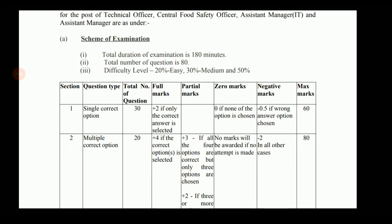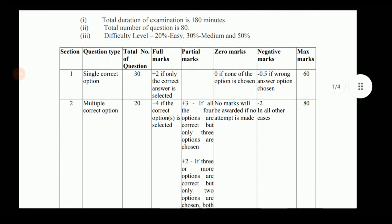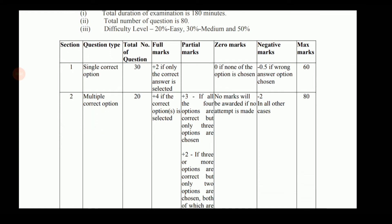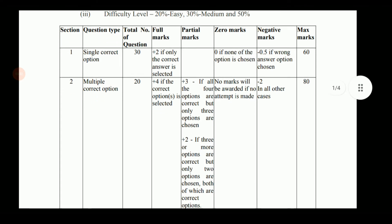Regarding the types of questions — comparing with CBT1, in CBT1 all questions were multiple choice questions with one correct option. In CBT2 there are six different types of questions. 30 questions will be single correct option type where only one option is correct out of four. The marking scheme: plus two for correct answers and negative marking of 0.5.